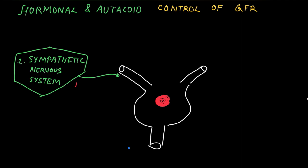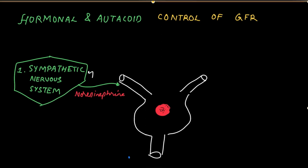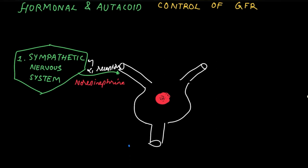With regards to the sympathetic nervous system, it releases the hormone norepinephrine mainly from the sympathetic nerve endings, and from the adrenal medulla epinephrine is released. Norepinephrine acts on alpha-1 adrenoreceptors, and by causing vasoconstriction and by decreasing the diameter of the efferent arteriole, it decreases the GFR.